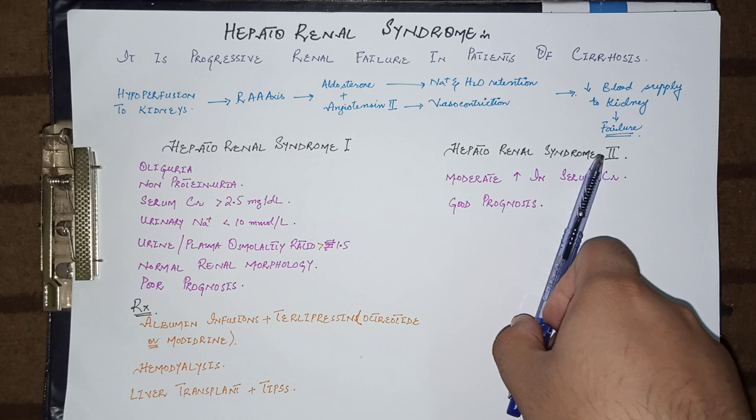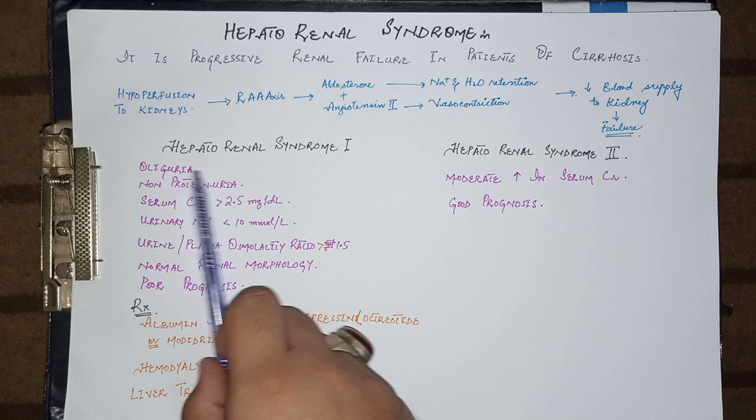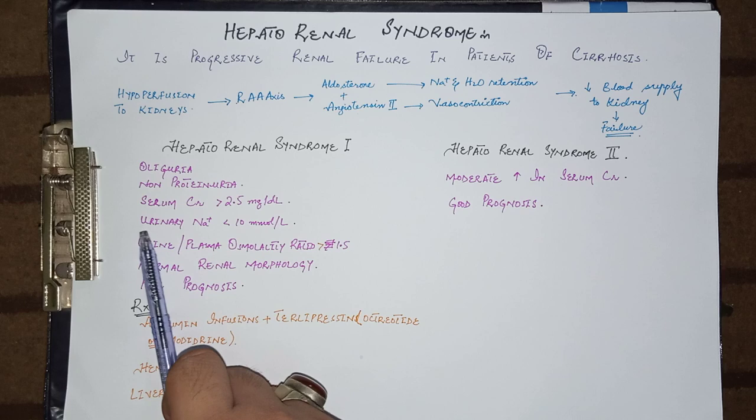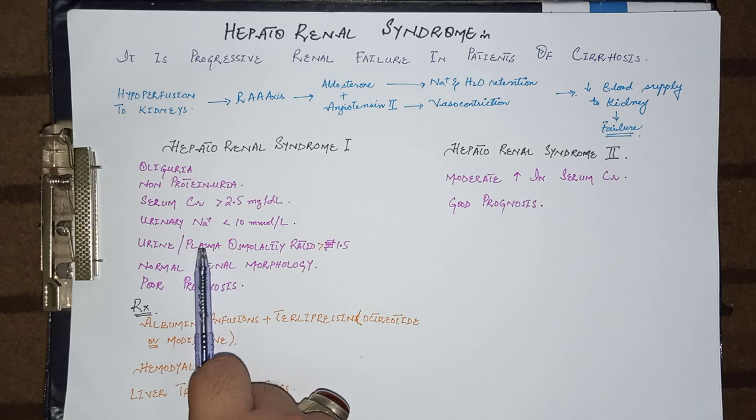In hepatorenal syndrome type 1, the patient has progressive deterioration in urine output, that is oliguria and non-proteinuria. There is no protein in the urine, but the serum creatinine levels are greater than 2.5 mg per deciliter, urinary sodium levels are below 10 millimoles per liter, and urine to plasma osmolality ratio is greater than 1.5.